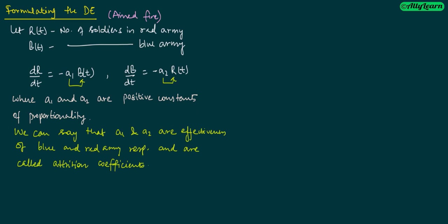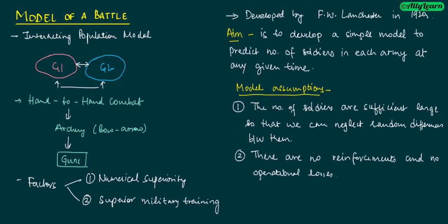We will stop this lecture here and in part 2 we will talk about the application of this model, then refine it with random fire — we will see how the model changes with random fire. We have built a basic model; hopefully you understood how the battle model is dealt with. We used the guns case, but with suitable assumptions you can always create different models. Hopefully you liked this lecture. Thank you for watching.